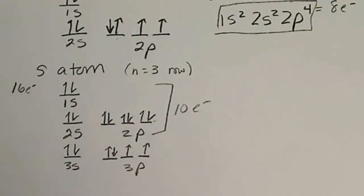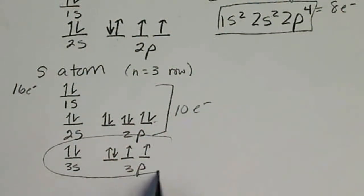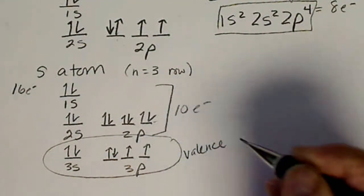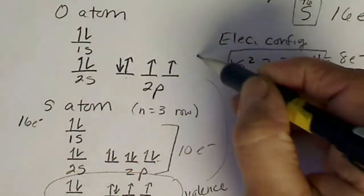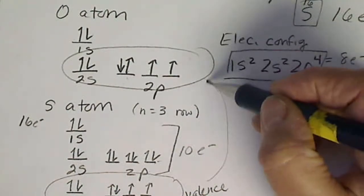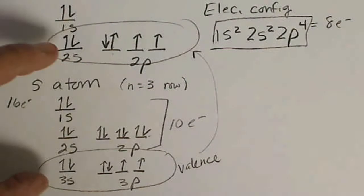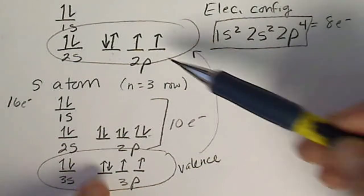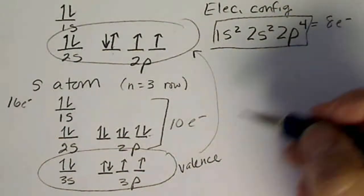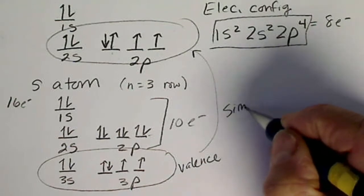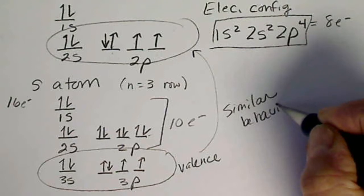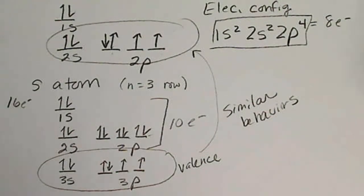Sulfur's outermost valence electrons look very similar to oxygen's. If you look at these two pictures, there are two electrons in each of the s orbitals and four electrons in the p orbitals. So they react similarly, and their valence electron picture is the same.